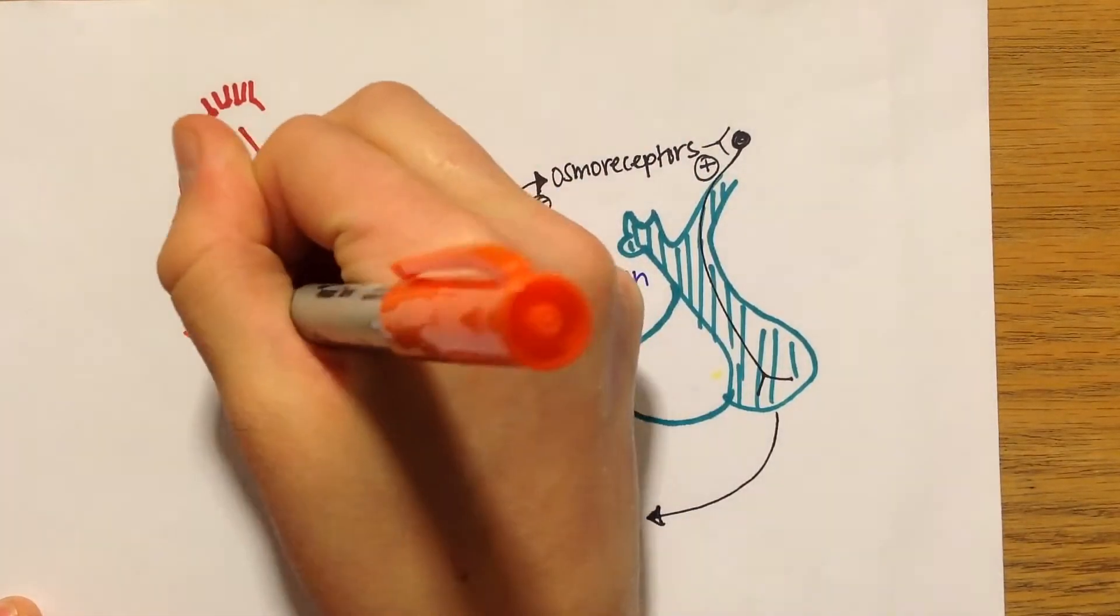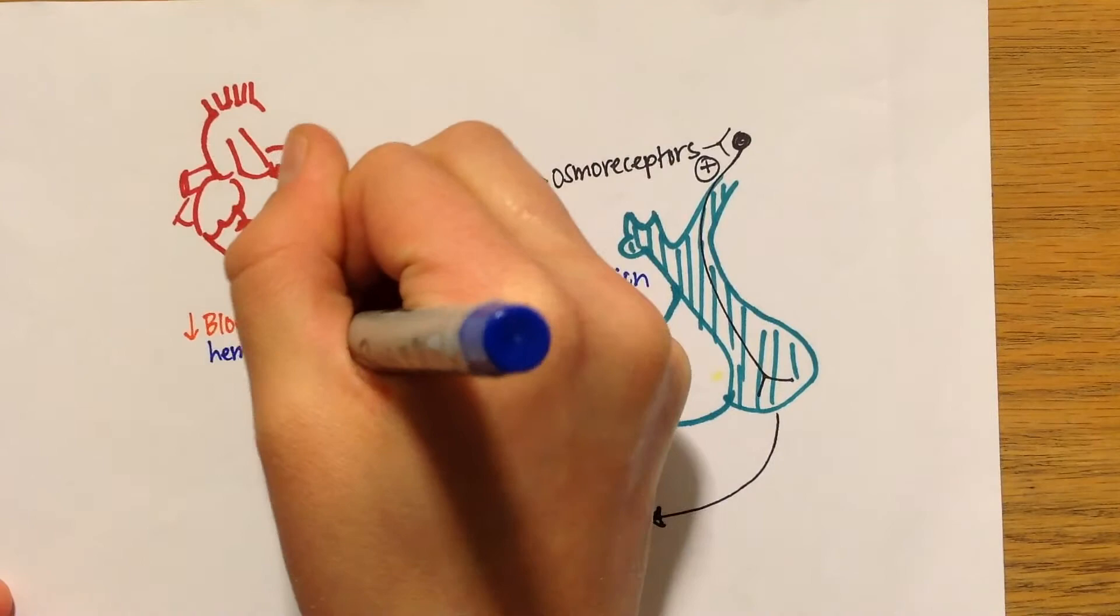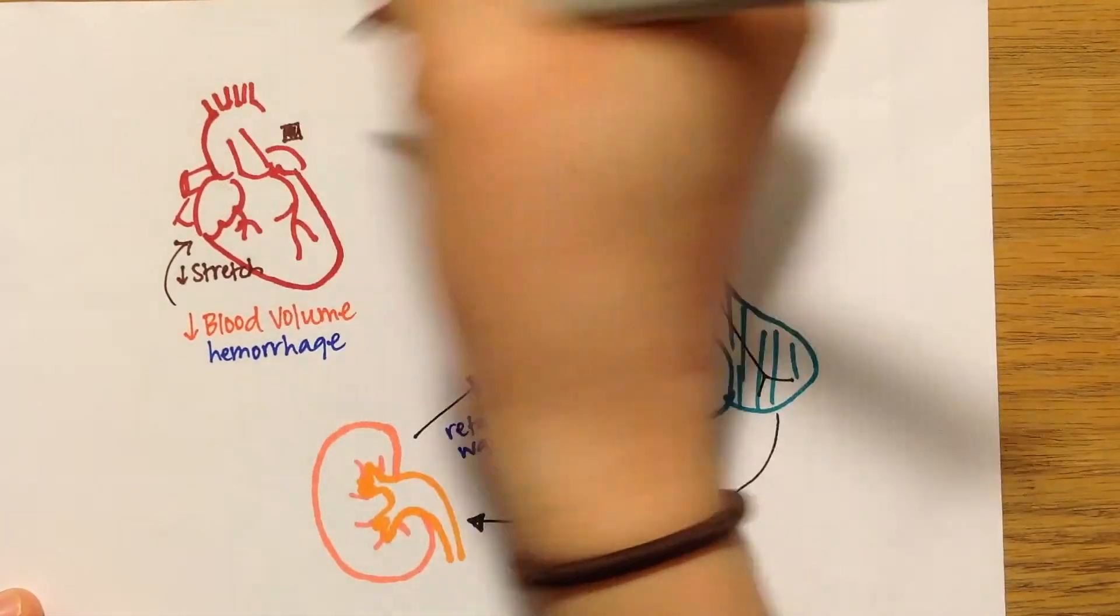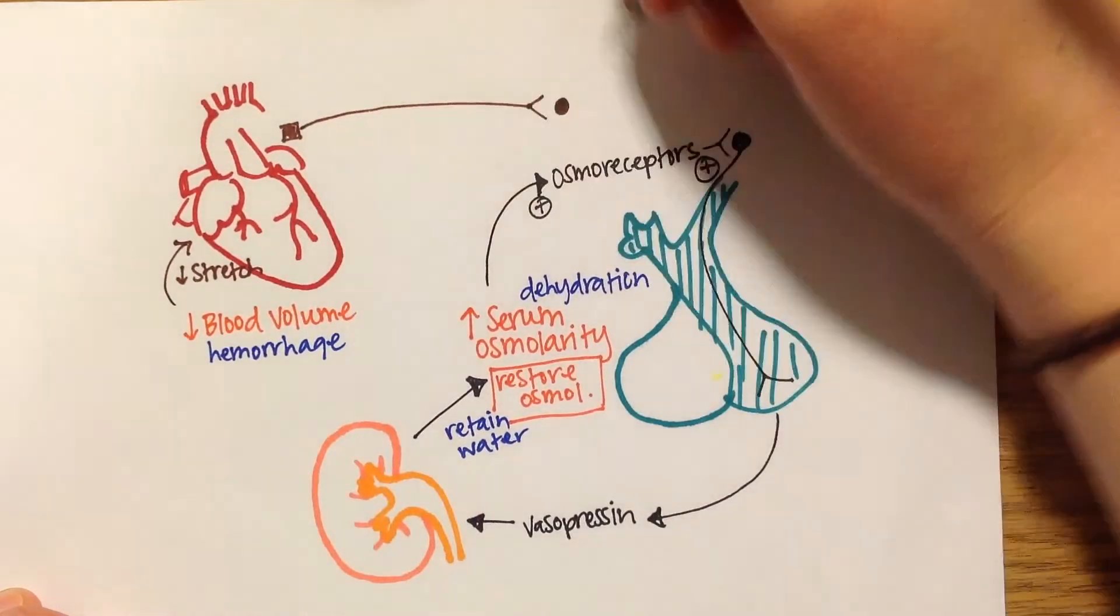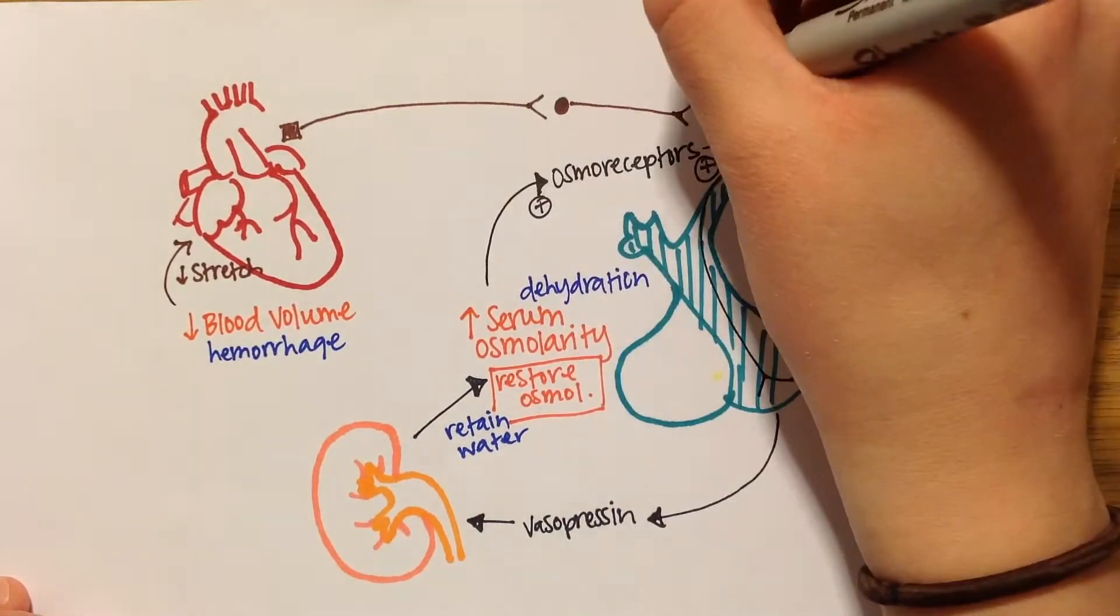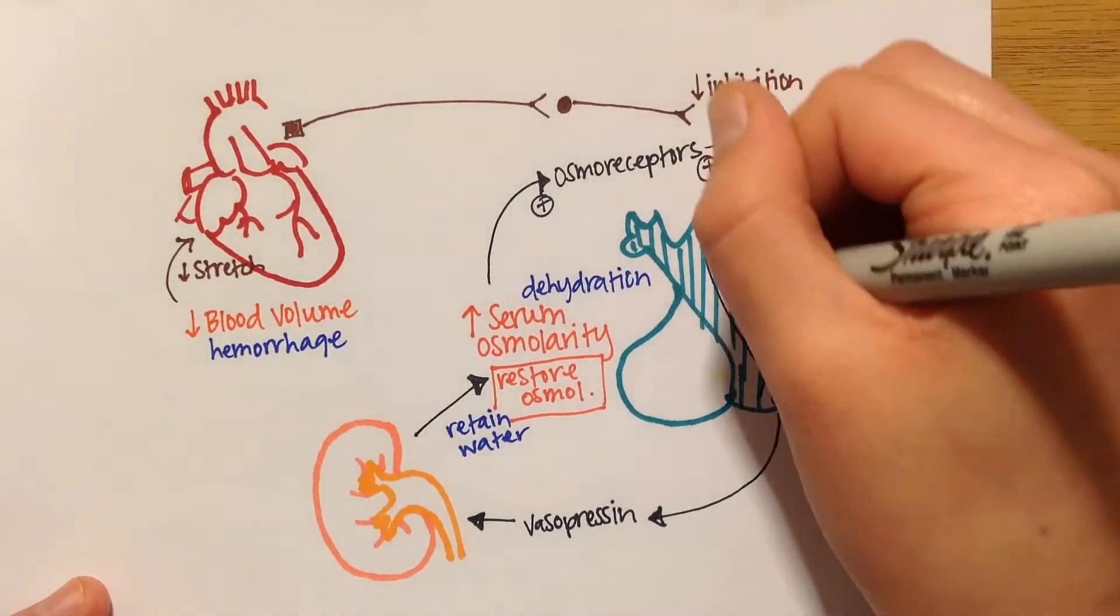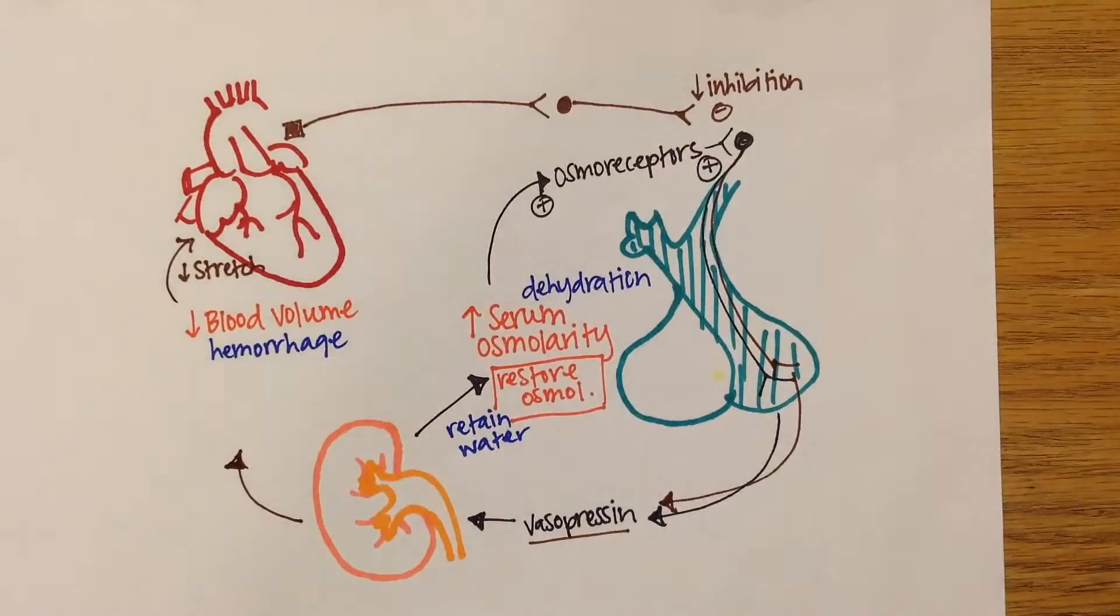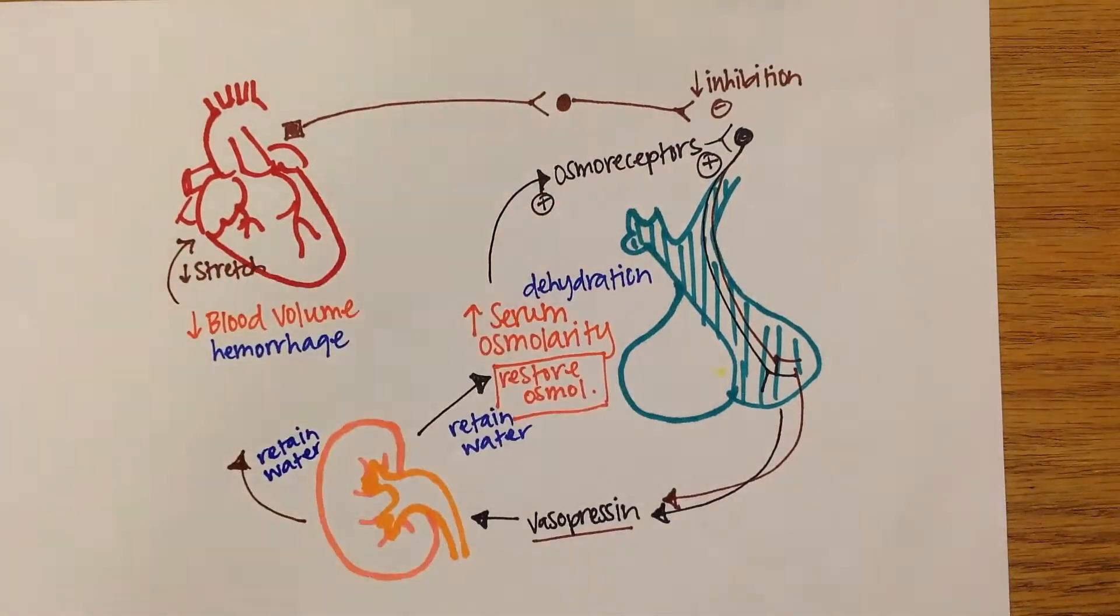After acute hemorrhage, the blood volume will be low, so the stretch receptors will signal less frequently. A high level of signal from the stretch receptors inhibits the release of vasopressin, so when the stretch receptors are firing less frequently, the inhibition will be inhibited, and vasopressin will be released to act on the kidney to retain water and restore blood volume.